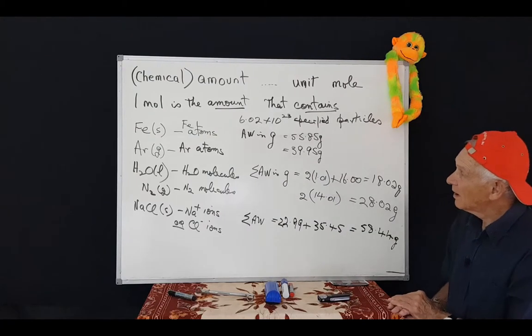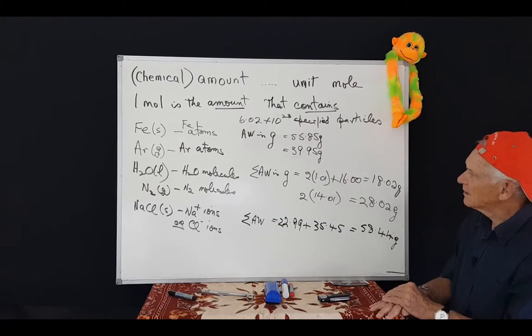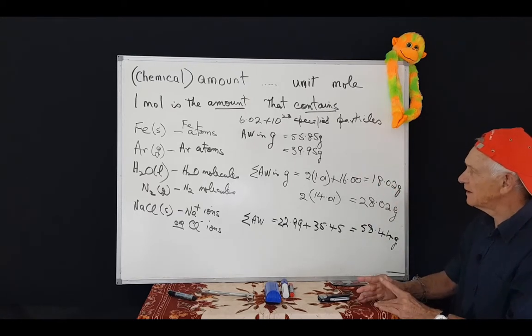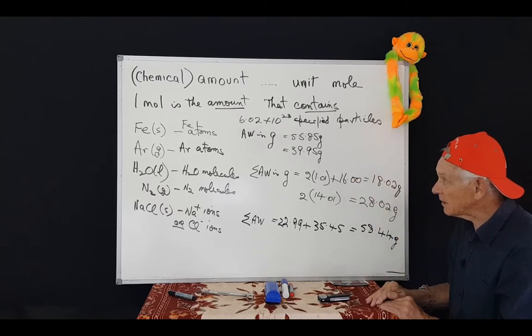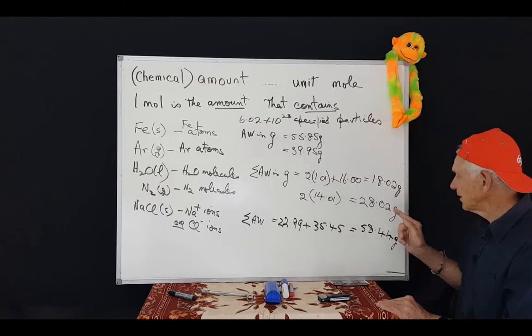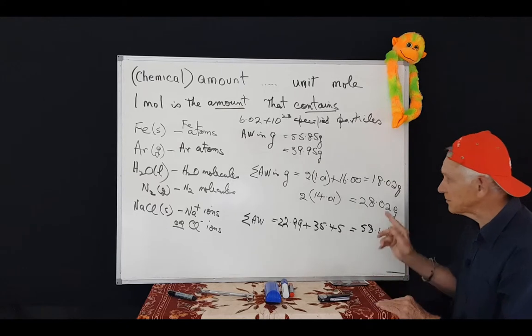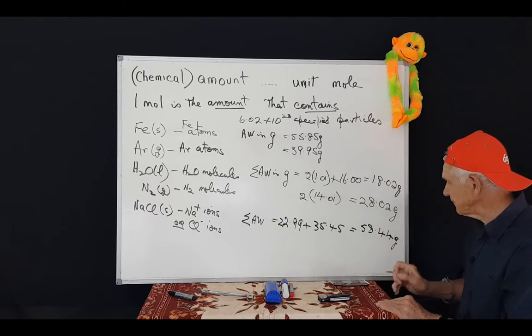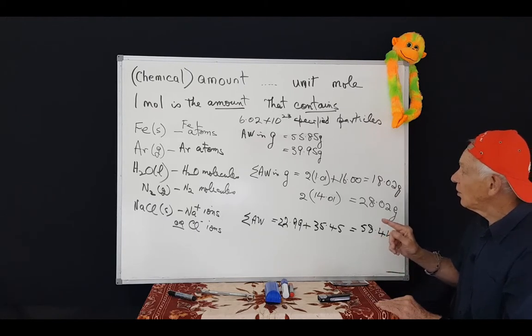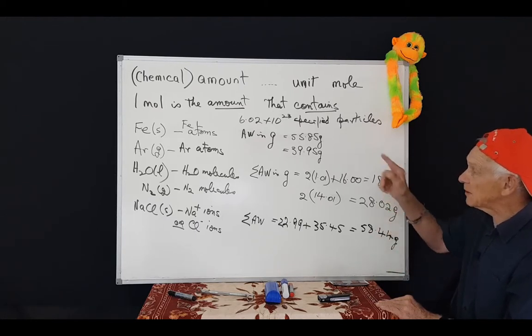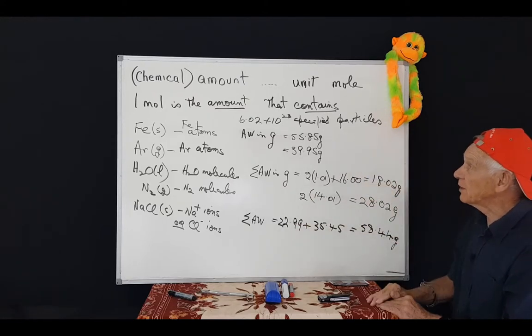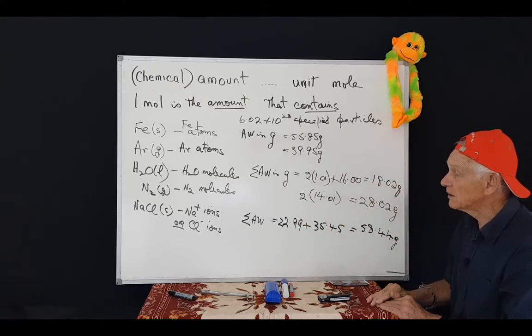Wow, I think I see, Prof. Let me clarify. 55.85 grams of iron, and 39.95 grams of this gas argon, and 18.02 grams of water, and 28.02 grams of nitrogen gas, and 58.44 grams of sodium chloride, all contain exactly the same number of particles of specified type. That's 6.02 by 10 to the 23. Is that right?